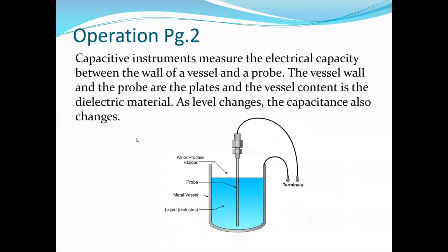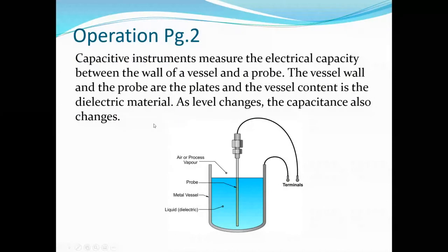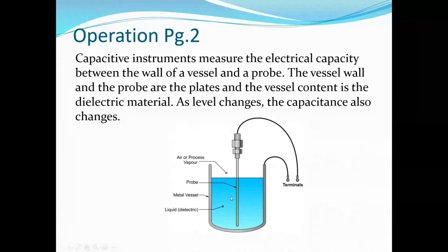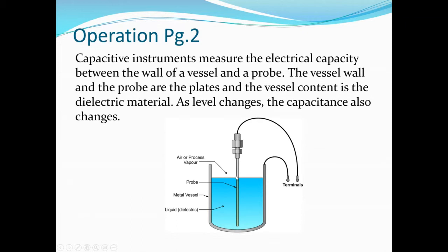Starting with Capacitance instruments. For those of you who are electricians, this will be a flashback to capacitor science — it is really just a large-scale version of a small capacitor. Capacitance instruments measure the electrical capacity between the wall of the vessel and the probe. The vessel wall and probe are the plates in the capacitor, and the vessel content — the process medium — is the dielectric material. As the level changes, capacitance throughout the range also changes, and that's how we get measurement from capacitance.